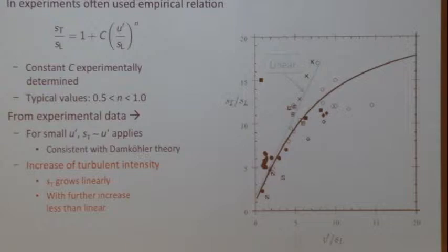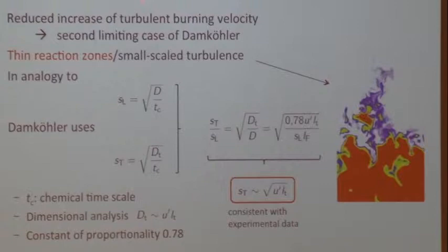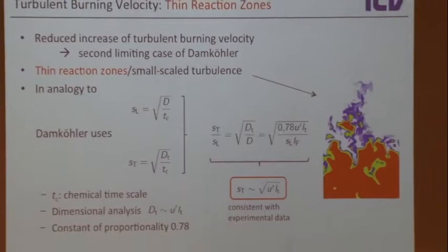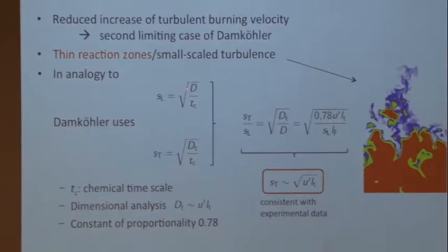That was a model for the corrugated flamelet regime. Now for what Damköhler called the small-scale turbulence regime — the thin reaction zones — he realized the flame structure doesn't change, but transport is enhanced. He assumed the chemical time scale doesn't change, but the transport diffusivity increases. So for laminar flames, S_L equals sqrt(D / tau_c), and for turbulent flames, replace D with the turbulent diffusivity D_T.